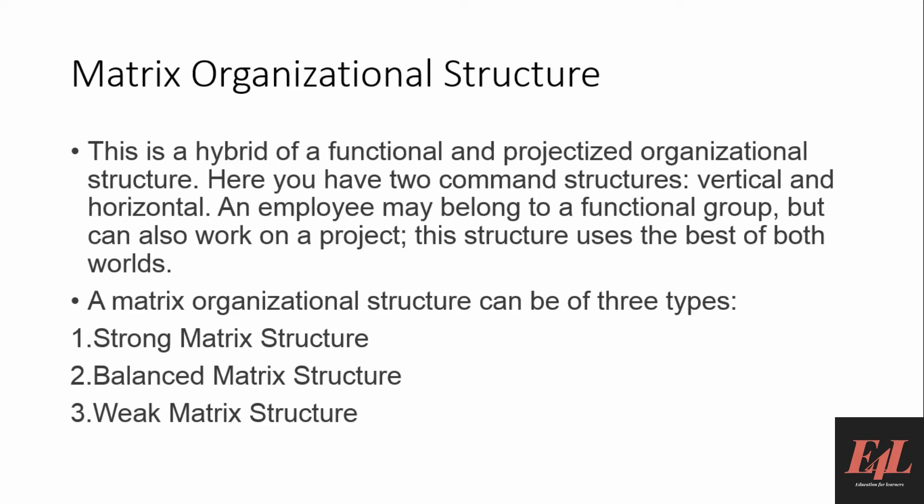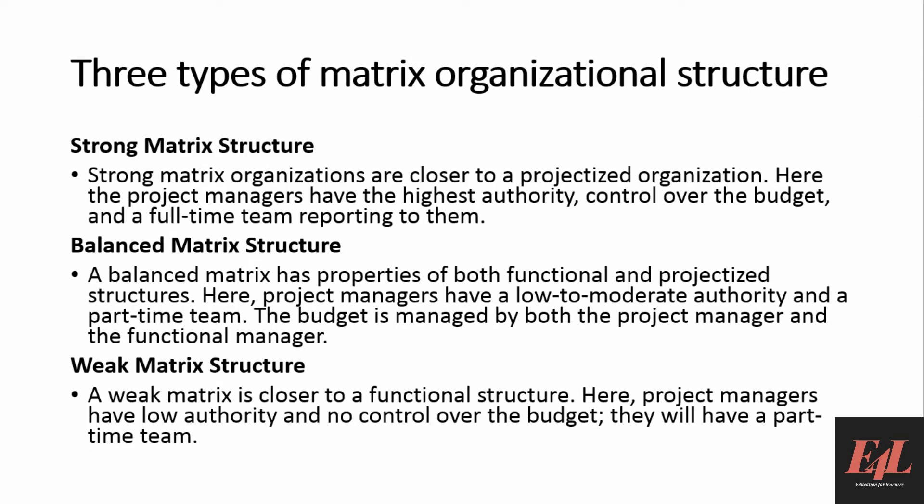Matrix organizational structures are a hybrid of functional and projectized organizational structures. Here you have two command structures: vertical and horizontal. An employee may belong to a functional group but can also work on a project — this structure uses the best of both worlds. A matrix organizational structure can be of three types: strong matrix, balanced matrix, and weak matrix.